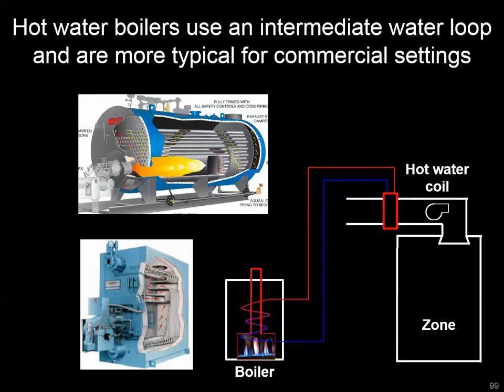There are two types of boilers you may see, depending on the shape of the heat exchanger inside. On the top, where combustion gases go through individual tubes and water is on the outside, we call that a fire tube boiler. On the bottom picture, with the rectangular boiler, water is going through the tubes, and we call that a water tube boiler.